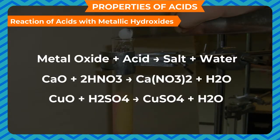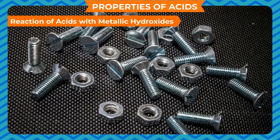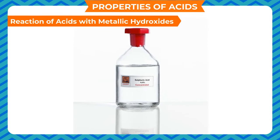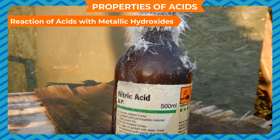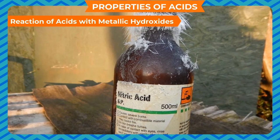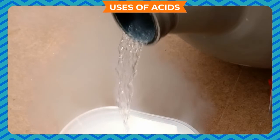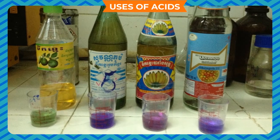Reaction of acids with metallic hydroxides: acids react with metallic hydroxides to form a metallic salt and water. Metal hydroxide + acid → salt + water. The name of the salt formed depends on the metal (first part) and the acid (second part). For example: sulfuric acid makes sulfate, hydrochloric acid makes chloride, and nitric acid makes nitrate.